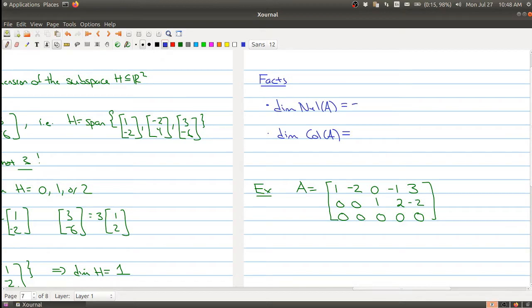And the dimension of the null space is just simply the number of free variables in the equation AX equals zero. So you have to row reduce your matrix, put it into reduced row echelon form and count the number of free variables.